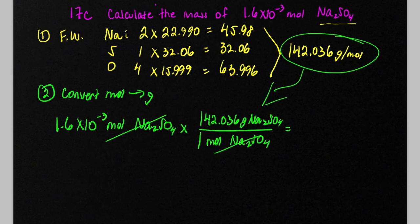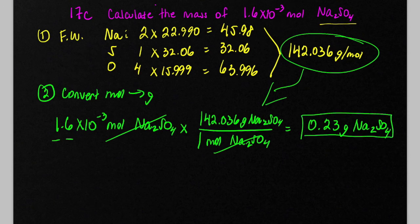And so on your calculator, you multiply these two and you get a result. Now we're going to round this off to two significant figures. So I get 0.23 grams. And it's a good idea to write the chemical formula there.